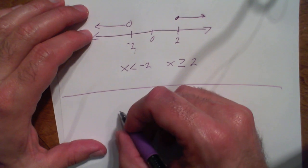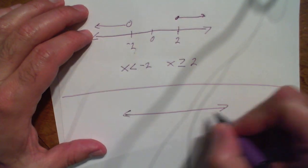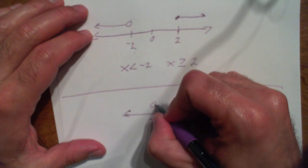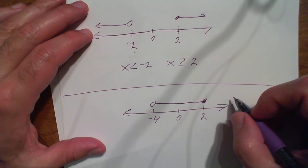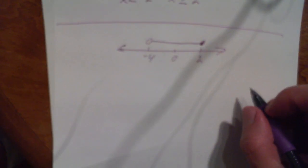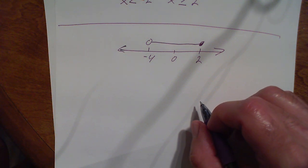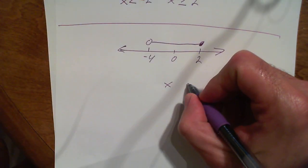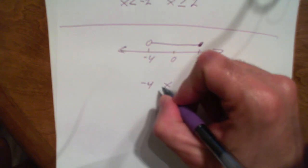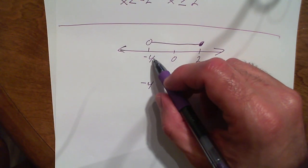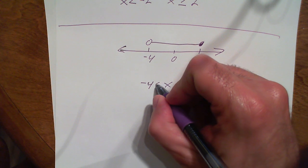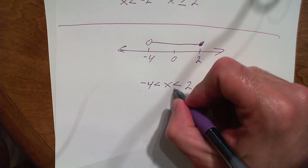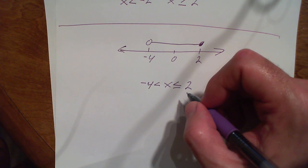Let's do another one. We go from negative 4 to 2, with 0 in the middle. Open circle at negative 4, closed circle at 2, one solid connected line. Go ahead and pause the video and write the inequality that represents this number line. It's one solid line, so we write one expression. x is bigger than negative 4 — not equal to. And x is less than or equal to 2.